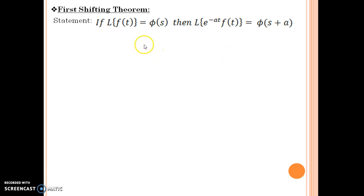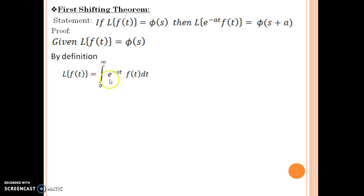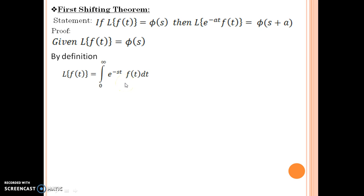We are going to have a look at the proof of this statement. We are given that Laplace of f(t) is equal to phi(s). By this time I have already introduced you several times to the definition of Laplace transforms, but I will introduce it once more. The definition is: Laplace of f(t) is the integral from 0 to infinity of e to the power minus st times f(t) dt. Here, the crucial observation is that this integral is represented by phi(s), because when you integrate over t, you get your answer in terms of s.